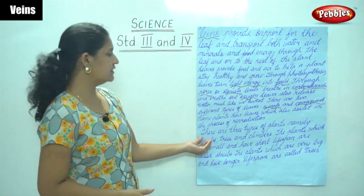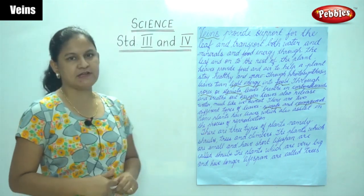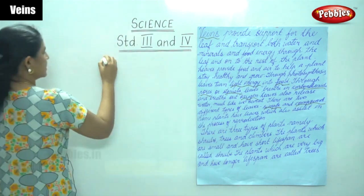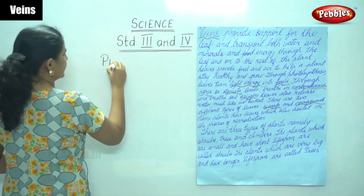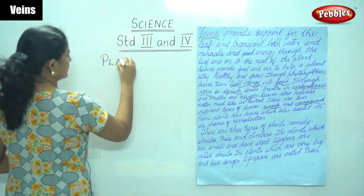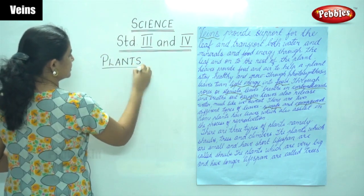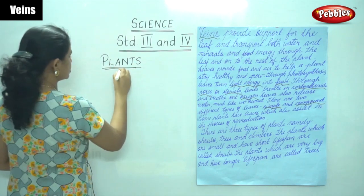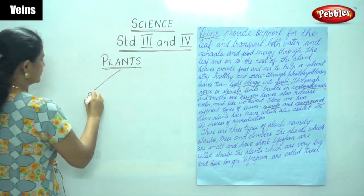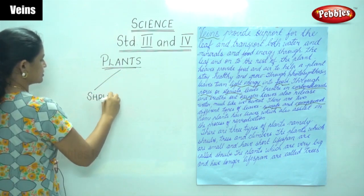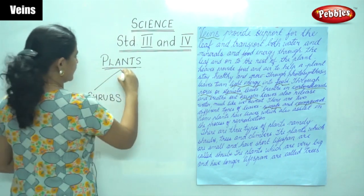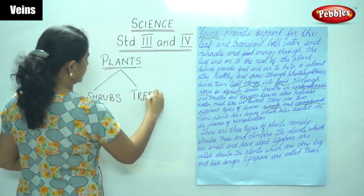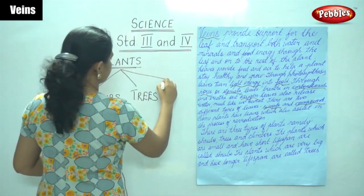Apart from the leaves, when we take into consideration the plants, there are three types of plants. Plants are classified into three different types: shrubs, trees, and climbers.